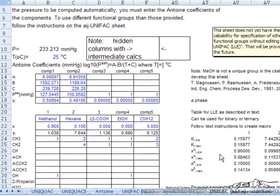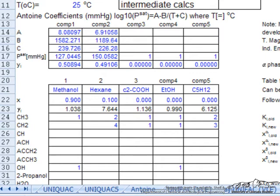So I have gone ahead and set up a problem with two components and we want to look at whether these components form different liquid phases. The components that I have set up are methanol and hexane and I have gone ahead and looked up the Antoine coefficients for those and put them in here.